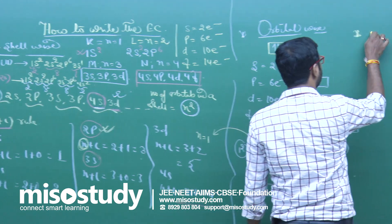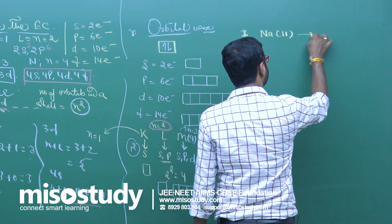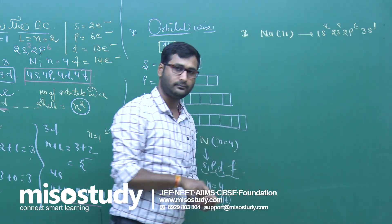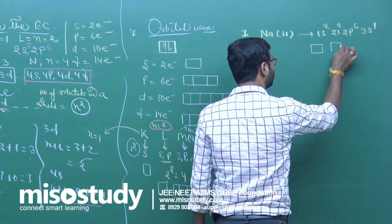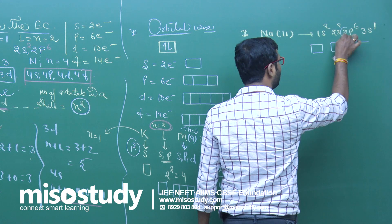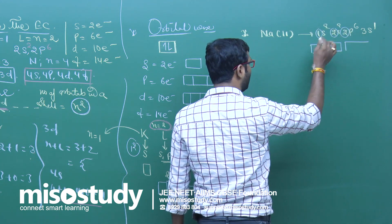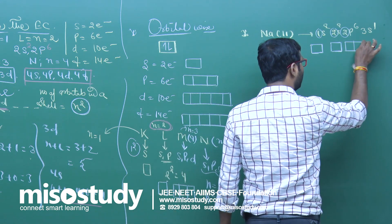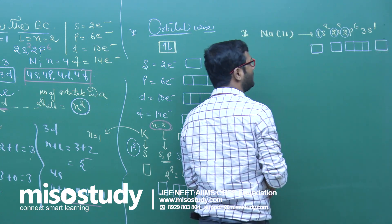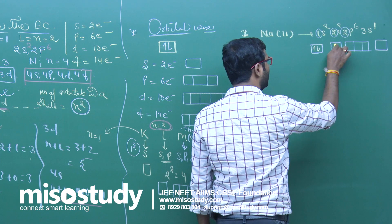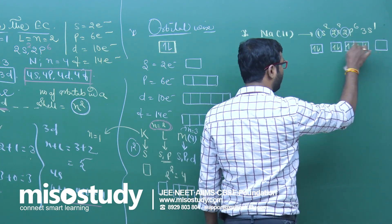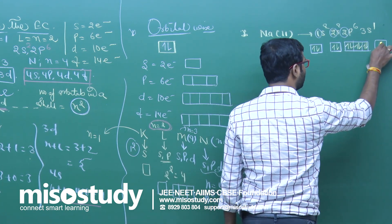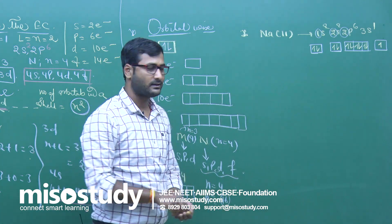Writing orbital-wise for sodium: sub-cell configuration is 1s², 2s², 2p⁶, 3s¹. Draw boxes — S has 1 box, so draw 1 box for 1s. S has 1 box for 2s. P has 3 boxes for 2p. S has 1 box for 3s. Fill: 1s gets 2 electrons, 2s gets 2 electrons. For 2p with 6 electrons: first each orbital gets 1 electron (Hund's rule), then pairing — giving 3 paired + 0. Then 3s gets 1 electron.